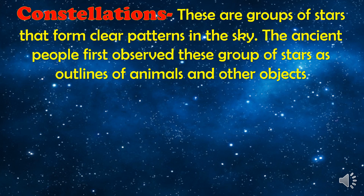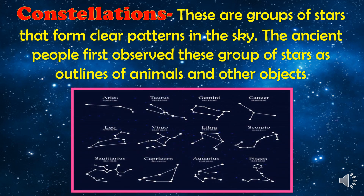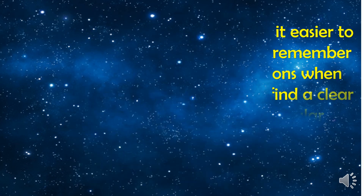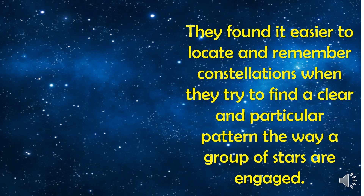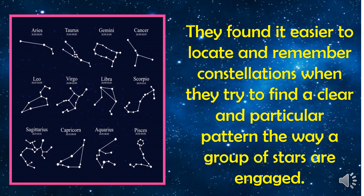This time, let us discuss about constellations. These are groups of stars that form clear patterns in the sky. The ancient people first observed this group of stars as outlines of animals and other objects. They found it easier to locate and remember constellations when they identified a clear and particular pattern in the way a group of stars are arranged.